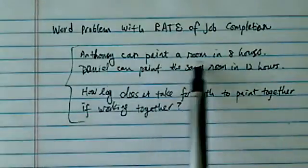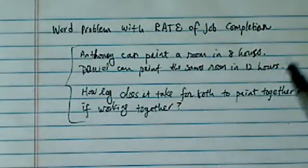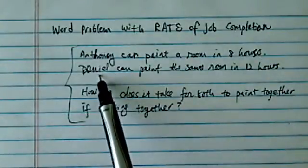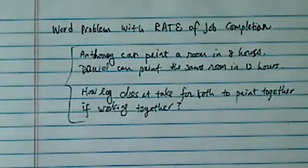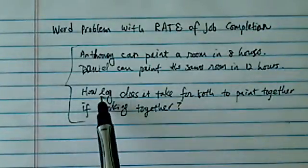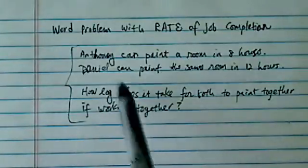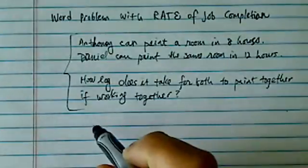We were told Anthony can paint a room in 8 hours. Must be a really big room, because our room I can paint in less than an hour. Tells you how big my rooms are. Anyway, Danielle can paint the same room in 12 hours. That's a slow worker, maybe meticulous. Anyway, we're told that if they paint together, and we want to know how long would they together need to spend to paint the room.